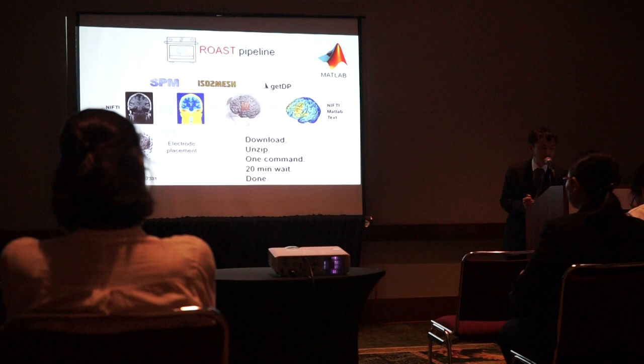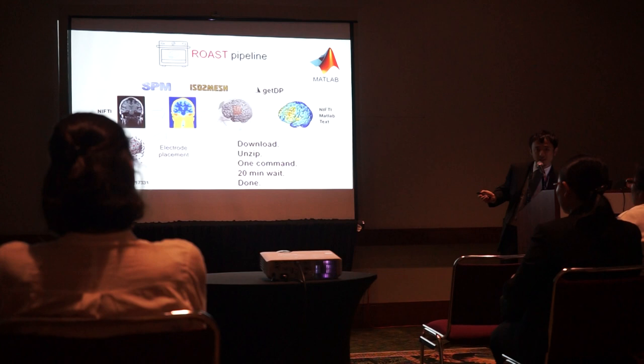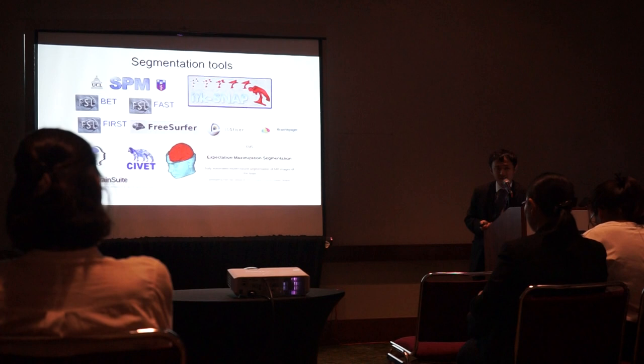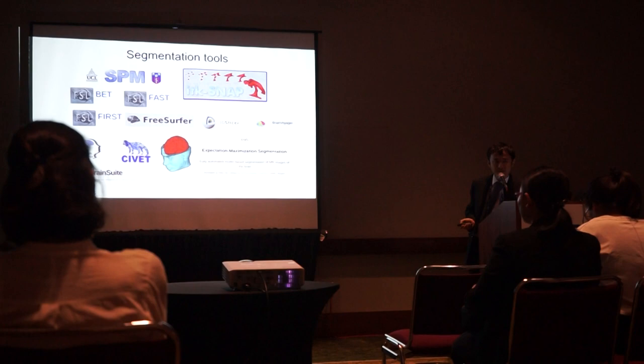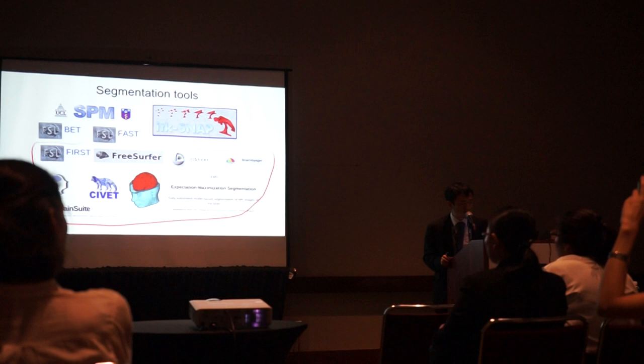In the next few slides, I'm going to talk about why I chose SPM, ISO2Mesh, and GetDP — three different softwares for this pipeline. When it comes to MRI segmentation, it's kind of a mess because there are a lot of different software options in this community, and when you first get started you don't know which one to use. For our purpose, because we're building models for transcranial electrical stimulation, most of them are not very relevant because the majority of software is designed only for segmenting the brain.